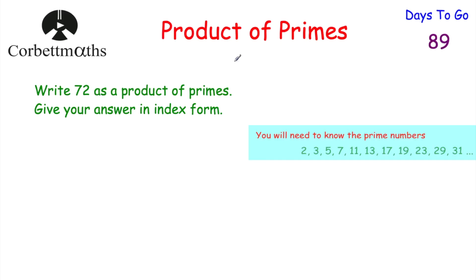Every single whole number greater than one — so two, three, four, five, and so on — is either a prime number or can be written as a product of prime numbers. Product means to multiply together, and primes are your prime numbers: two, three, five, seven, eleven, thirteen, seventeen, and so on. It's important you know those prime numbers. So every whole number greater than one is either a prime or can be written as prime numbers multiplied together.